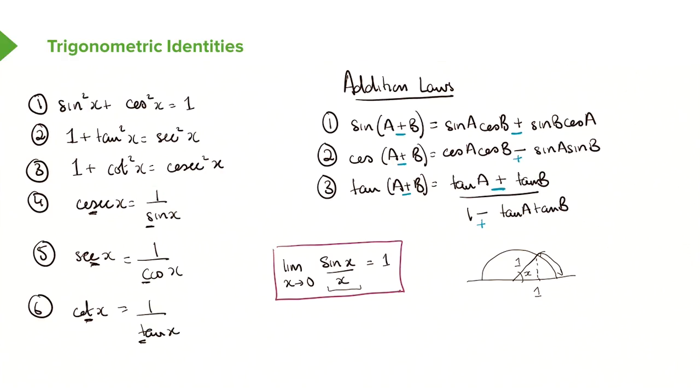If we remind ourselves of what the arc length here, so the arc length of any circle is just r theta, and this should be in radians. R in our case is just 1, and theta is x. So the arc length here is just going to be x.